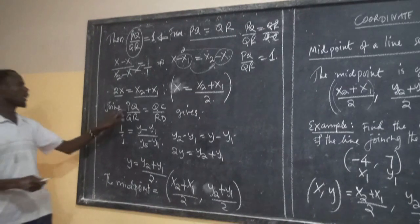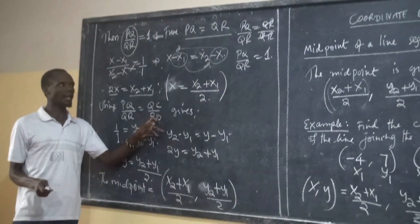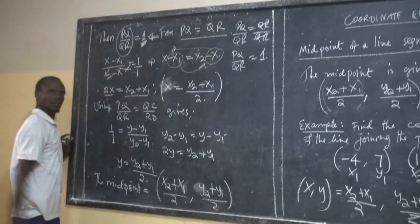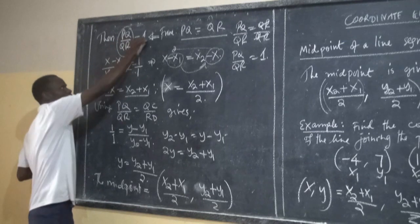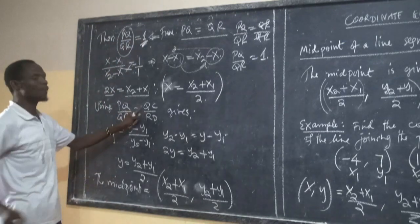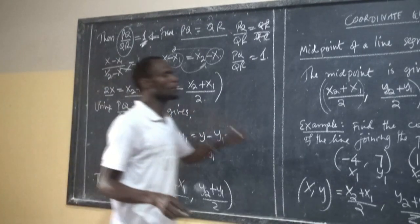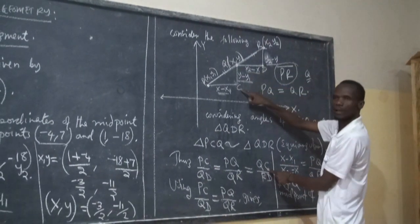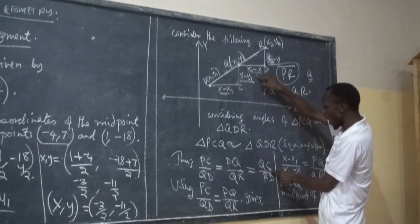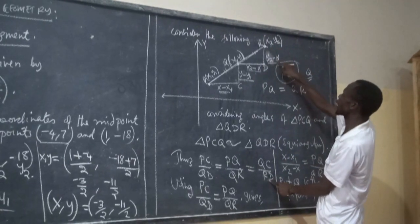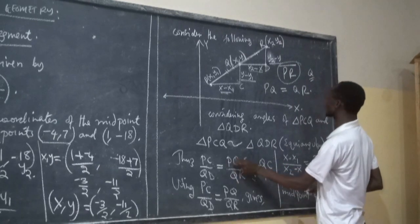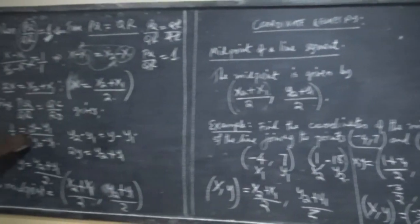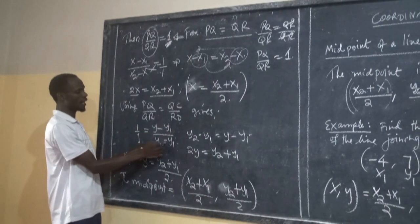Now, by considering PQ over QR equals QC over RD, and since PQ over QR equals 1, we substitute. QC represents Y minus Y1, and RD represents Y2 minus Y. Cross multiplying: Y2 minus Y equals Y minus Y1. Collecting like terms: Y and Y become 2Y, so 2Y equals Y2 plus Y1.